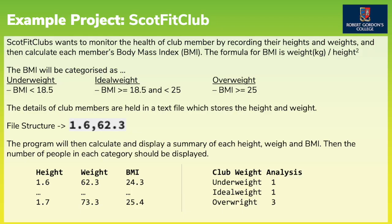Let's have a look at an example project from the Computing Science Department at Robert Gordon College. Scott Fit Clubs wants to monitor the health of club members by recording their heights and weights and then calculating each member's body mass index. The formula for BMI is weight divided by height squared. The BMI will be categorised as underweight, ideal weight or overweight. The details of club members are held in a text file which stores the height and the weight. The programme will then calculate and display a summary of each height, weight and BMI.